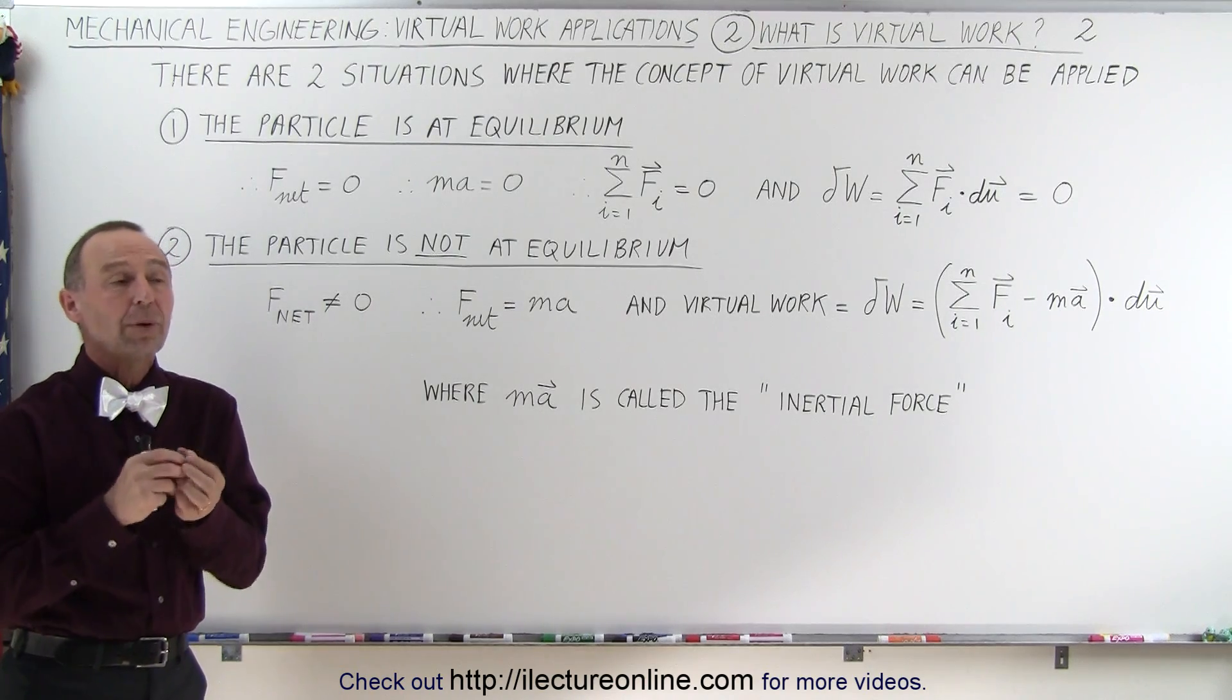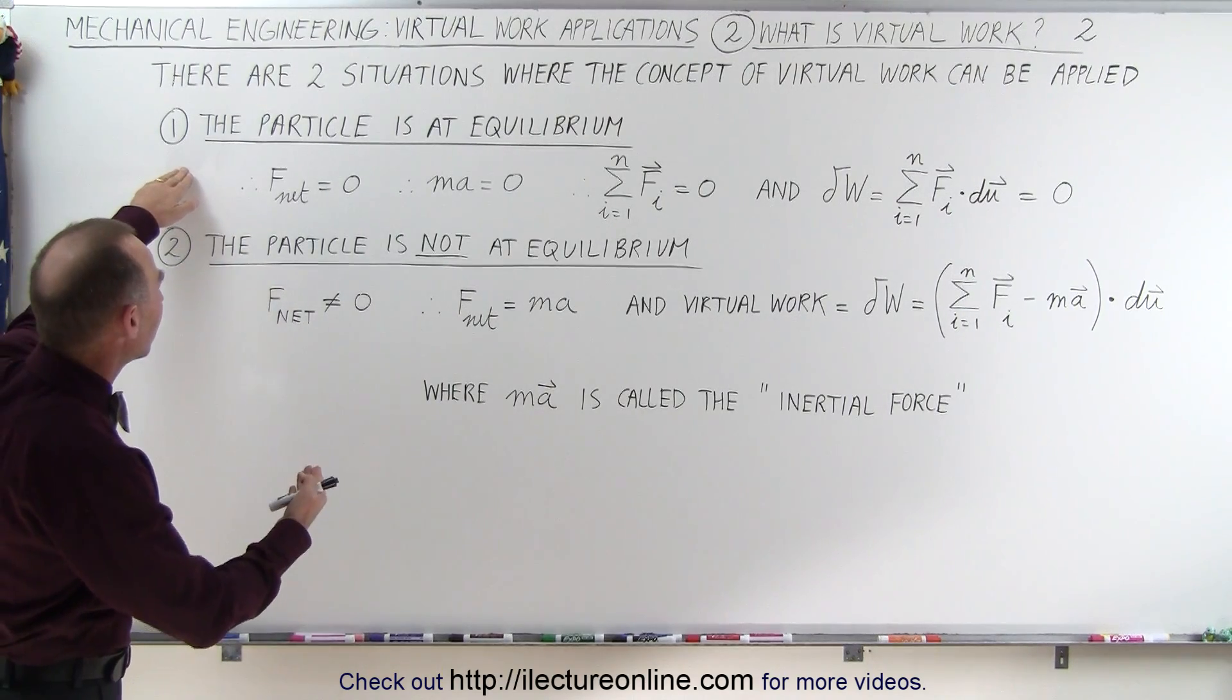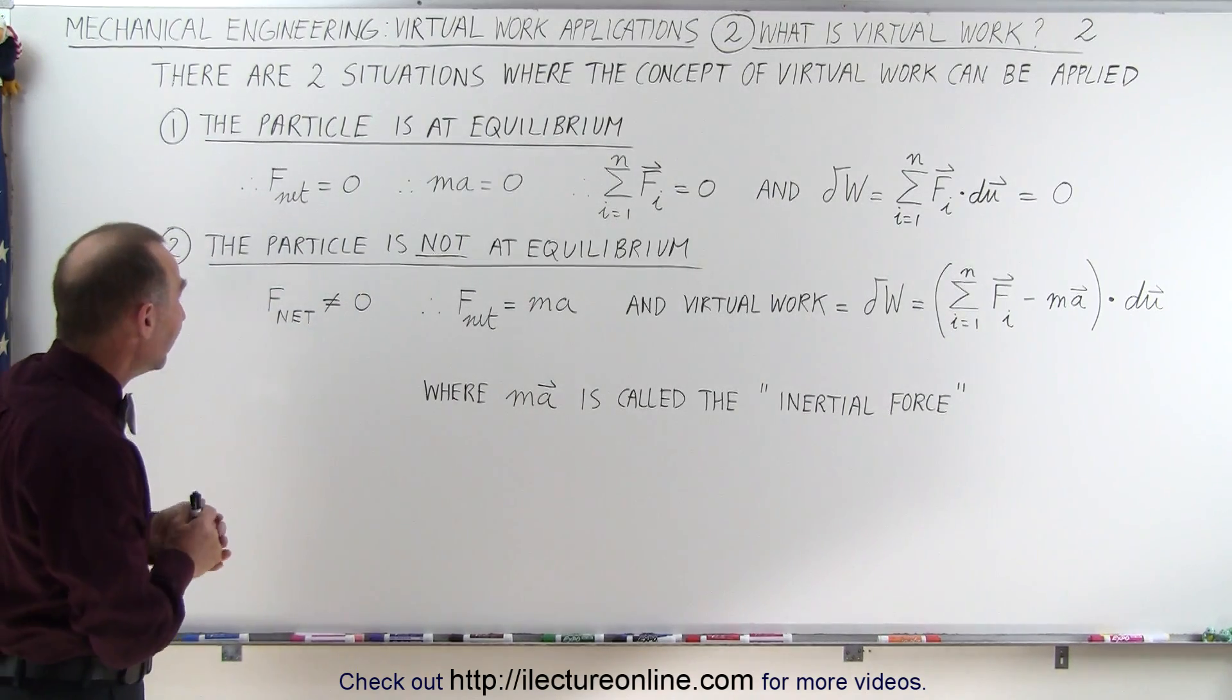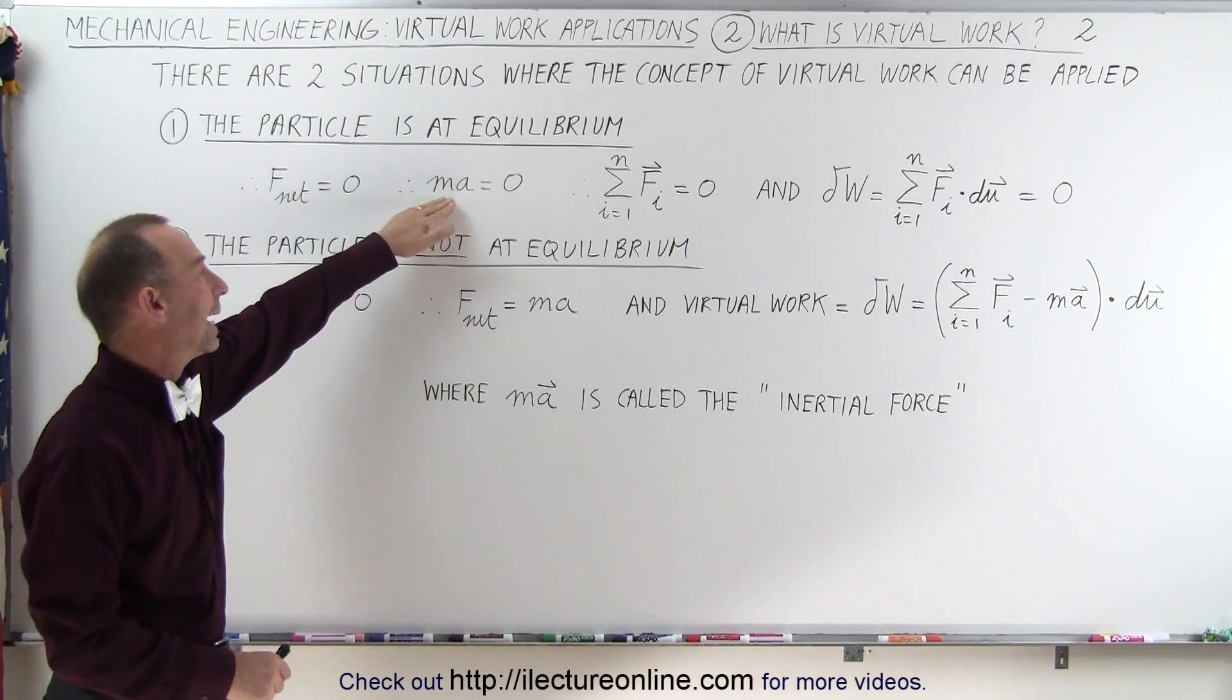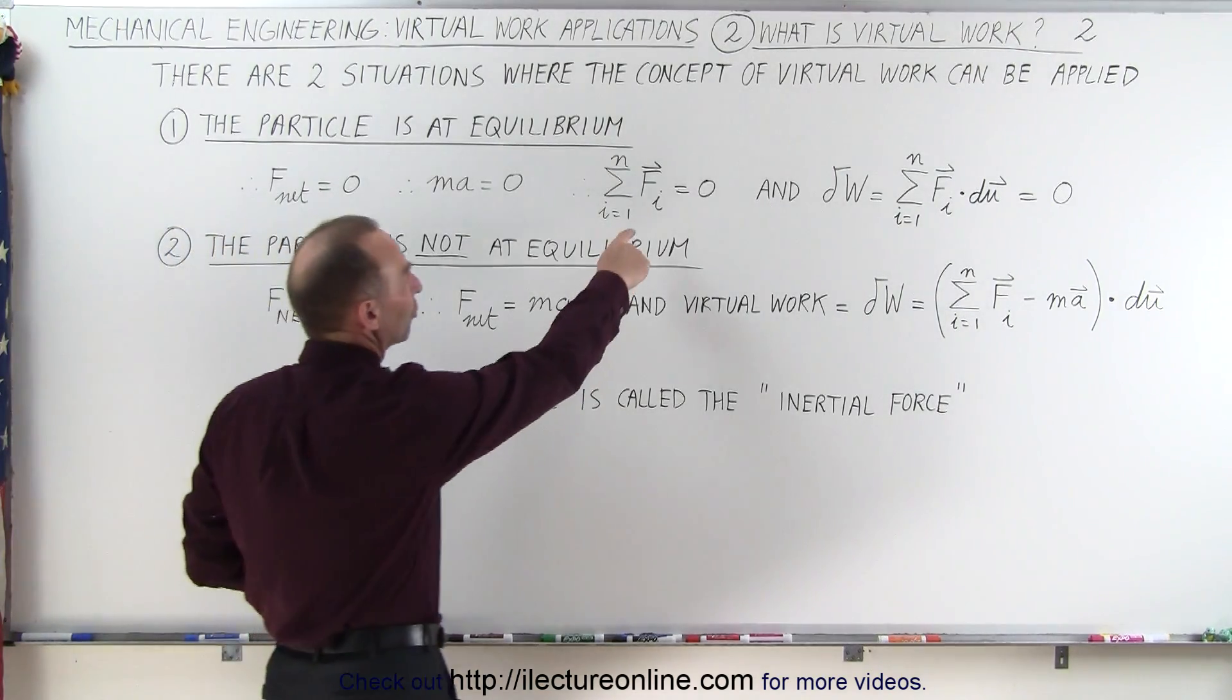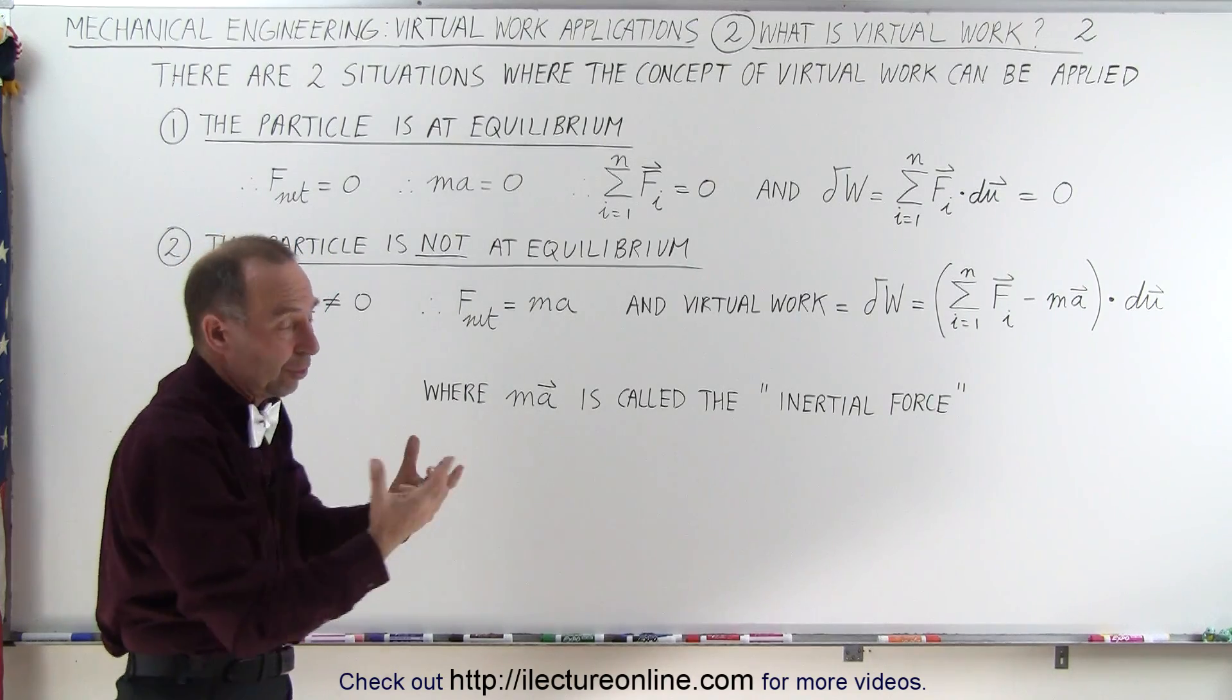It's probably most useful when we have a situation where things are at equilibrium. So the first case, we're going to consider when the particle is at equilibrium, which means that the net force acting on the particle must be equal to zero, and if there's no net force, then there's no acceleration, so the m times a term in Newton's second law must also equal zero. Which means that if we add up all the forces acting on a particle or acting on a particular point in the truss, we can assume, or in the system,